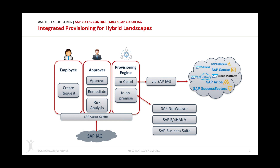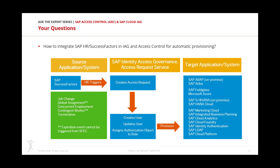In the IAG bridge scenario, Access Control provisions the on-premise world and IAG provisions the cloud. That's the integrated approach for a holistic hybrid landscape provisioning. From an employee and approver perspective, nothing really changes — in Access Control, Ariba, SuccessFactors, and Marketing Cloud are just connectors, the same as on-premise systems. It looks and feels exactly the same process users are used to. If you have any questions, type them into the questions panel.